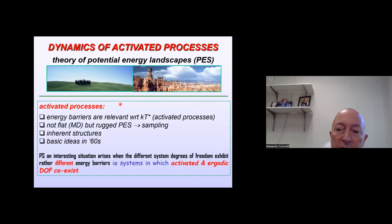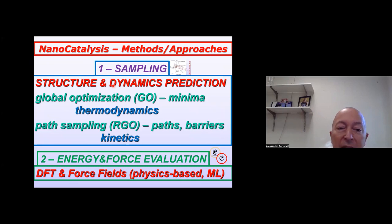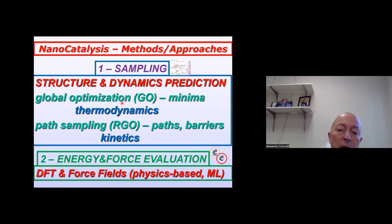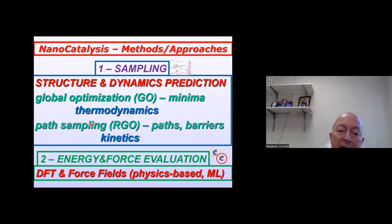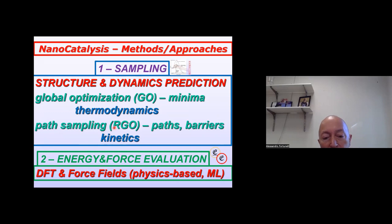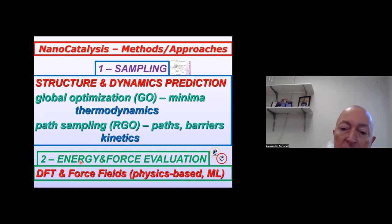This dynamics of activated processes is a long-standing problem. We have developed a set of tools to deal with it: global optimization tools to search for local minima, and path sampling tools for searching for saddle points. I will focus on all the sampling that you have to do. You can do it at different levels, and what I'm talking about today is how to accelerate this sampling using complementary tools like machine learning, the interpolation of the potential energy surface.